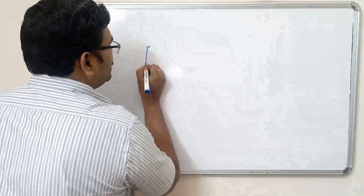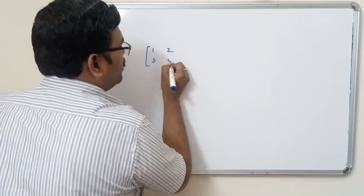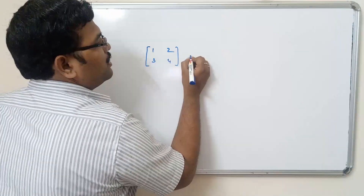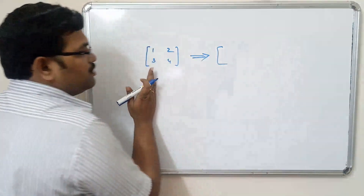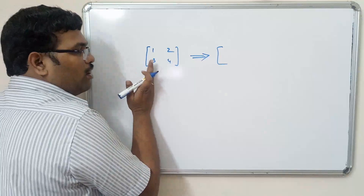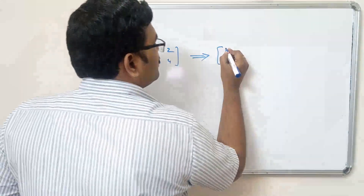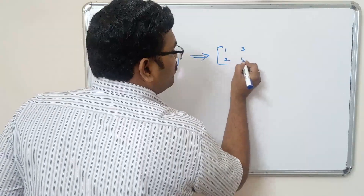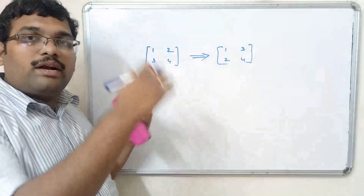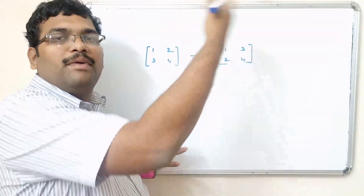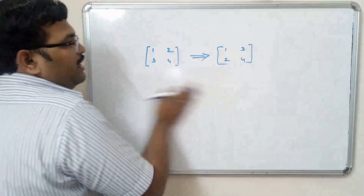If you consider a 2x2 matrix with elements 1, 2, 3, 4 — the transpose of a given matrix means the rows will be shifted to columns and the columns will be shifted to rows. So it becomes 1, 3, 2, 4. Simply, the lower triangle will be shifted to the upper triangle and the upper triangle will be shifted to the lower triangle.